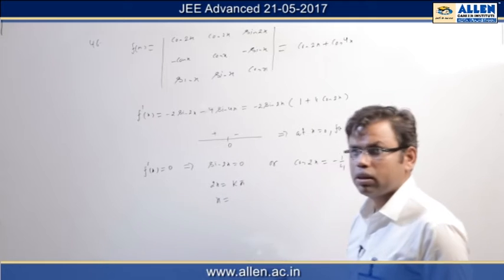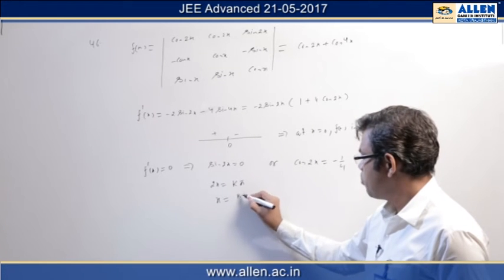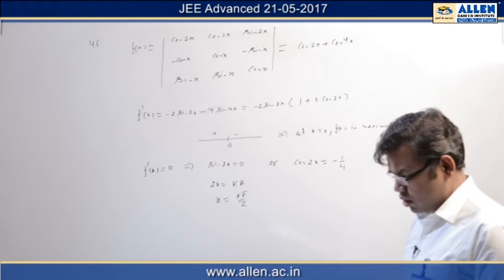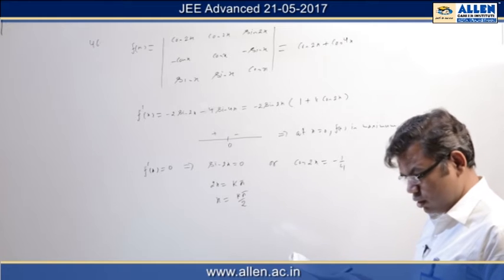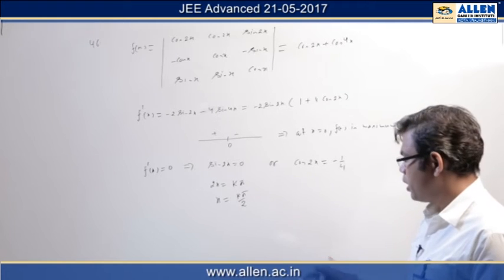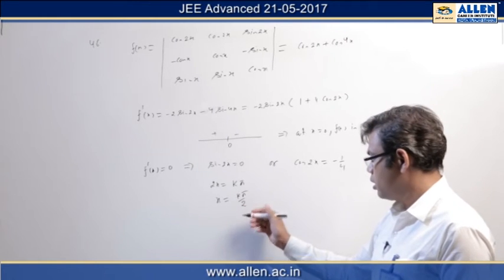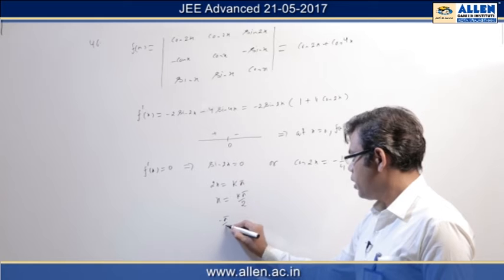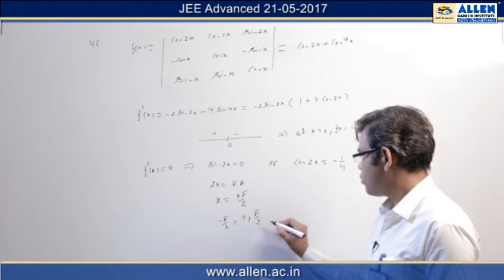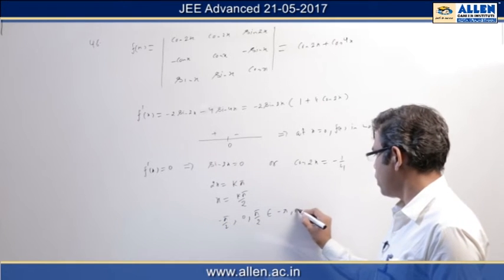Now in case of sin 2x equal to zero we will get 2x equal to some k pi. So we will get x equal to k pi by 2. Now in between minus pi to pi from here only we will get at least 3 solutions: minus pi by 2, zero, and pi by 2, all belongs to minus pi to pi.